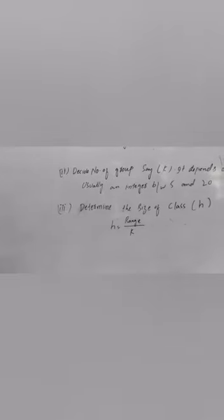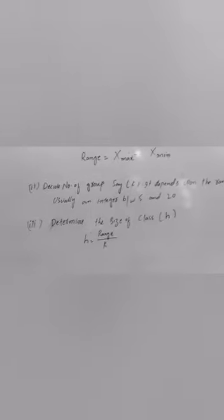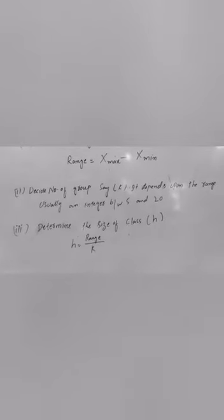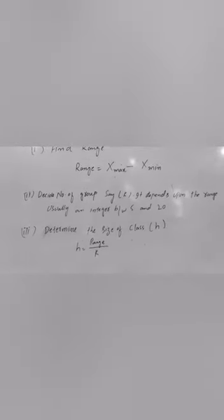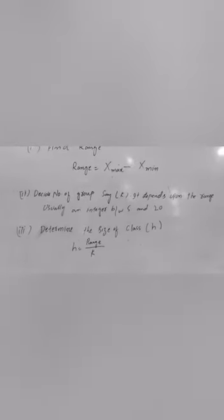After finding the range and number of groups, we calculate the size of the class interval. After writing the minimum value, we use tally marks in the fifth step, and in the sixth step, we use tally marks to write the frequency. Now let's do an example of continuous frequency distribution.